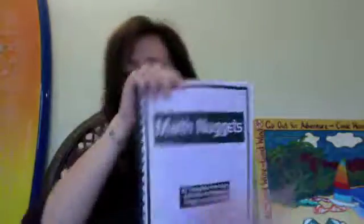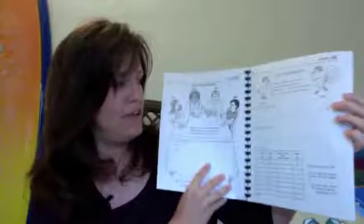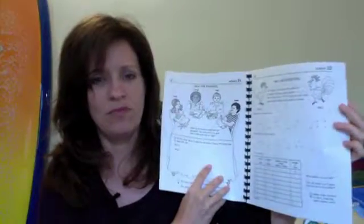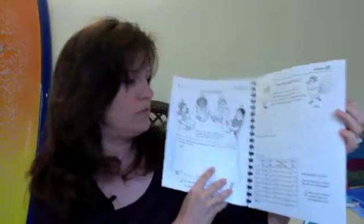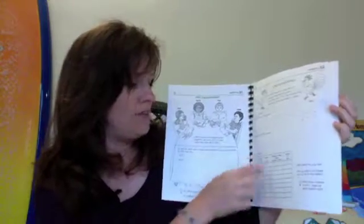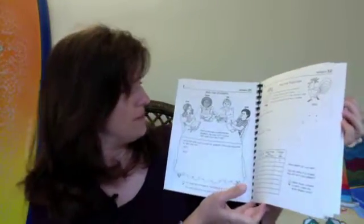The last one I want to show you is Math Nuggets. This was super fun. It has all kinds of reproducible activities. Again, they're not your typical activities. A lot of them use other materials besides what's on the page. You have to find sticks or toothpicks or whatever it calls for. You might need to cut out something or use a protractor or compass.